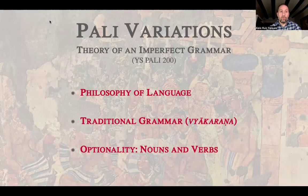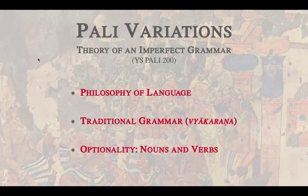So this course is structured in three blocks — three areas that are important in this course, and they are all intertwined, so we are going to discuss the three of them at the same time. The first block, or the first important aspect of the course, is philosophy of language. We are not simply going to teach grammar. We are also going to delve into the theories of language and the theories of grammar that have shaped both the traditional discourse on how to understand Pali and the modern historical approach to Pali.